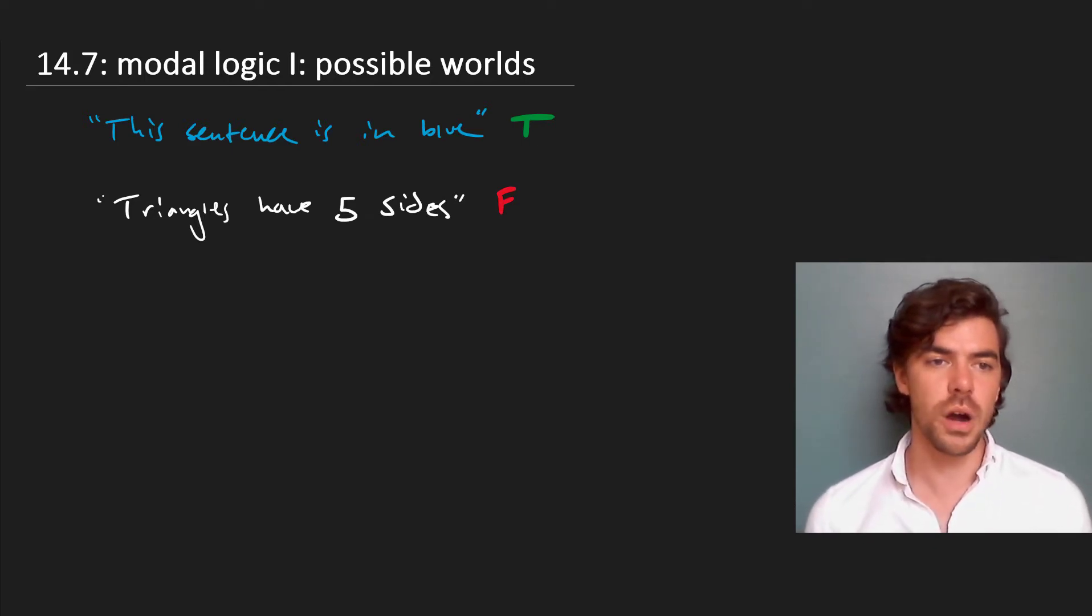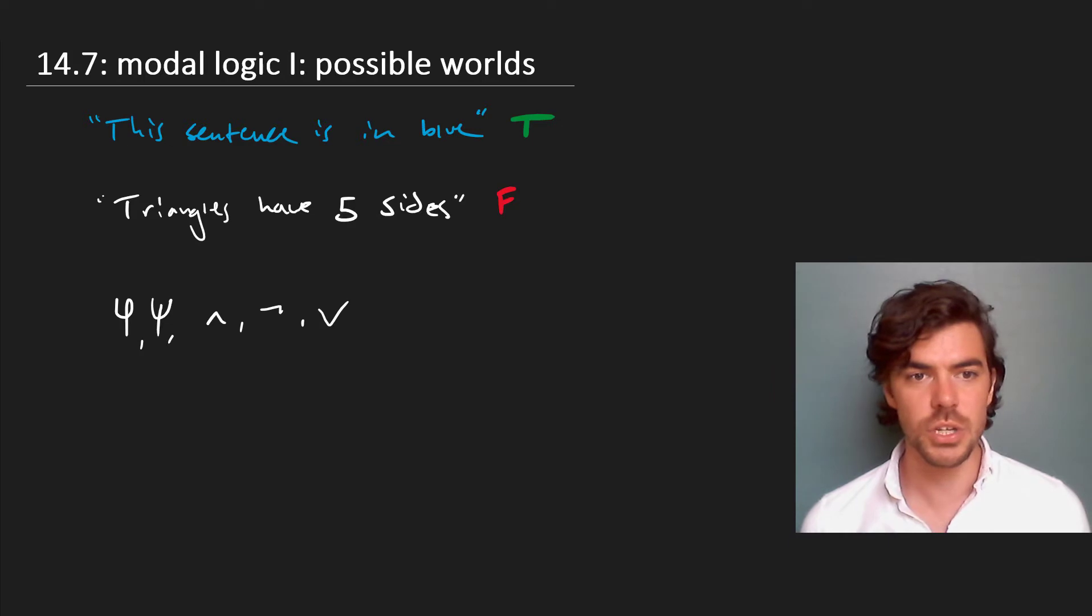We'll go back to our original propositional calculus with sentence letters. We'll use phi and psi, along with the Boolean connectives for simplicity. Although we can get the material conditional and biconditional from these, instead of talking about quantification over objects in the domain, we talk about quantification over worlds.